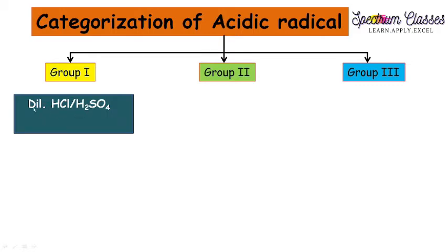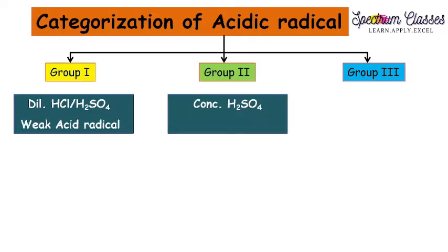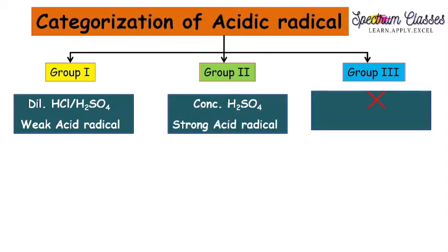We generally prefer dilute H₂SO₄ for Group 1. For Group 2, we are having concentrated H₂SO₄. And for Group 3, there is no such group reagent defined. On the basis of their group reagents, these acid radicals are also known as weak acid radicals, strong acid radicals, and general acid radicals.